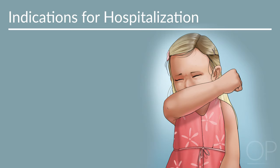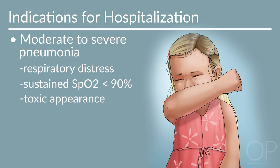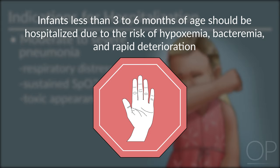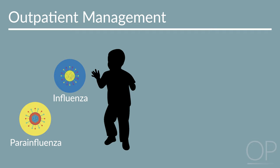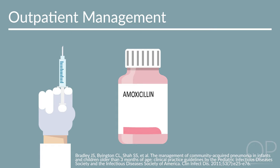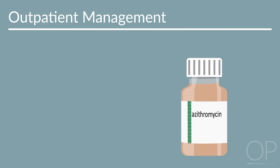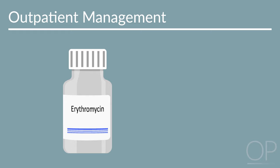Management. Appropriate treatment depends on illness severity and whether the patient requires hospitalization. Indications for hospitalization include moderate to severe pneumonia defined by respiratory distress, sustained oxygen saturation less than 90%, or toxic appearance. Infants less than 3 to 6 months of age should be hospitalized due to risk of hypoxemia, bacteremia, and rapid deterioration. Preschool-aged children, who frequently have viral pneumonia, are not routinely treated with antimicrobials. For fully immunized children of all ages with suspected bacterial pneumonia, high-dose oral amoxicillin is first-line treatment for coverage of Streptococcus pneumoniae. Macrolides such as azithromycin are first-line for atypical pneumonia, though resistance is rising.